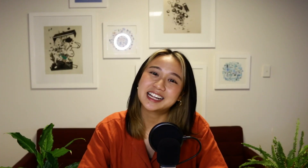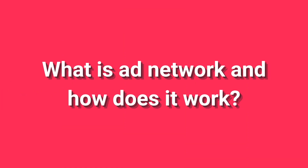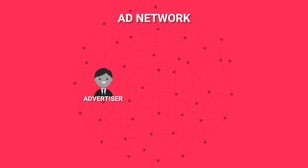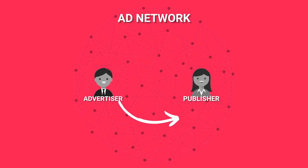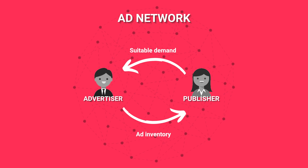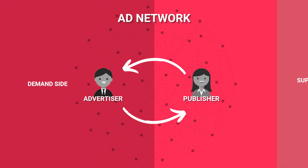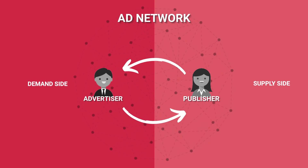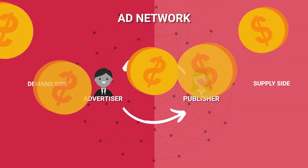I'm Naomi from PubLift and today we're talking about ad networks. So what is an ad network and how does it work? In essence, an ad network serves as the digital intermediary between advertisers and publishers, matching available ad inventory with suitable demand. By connecting advertisers on the demand side with publishers on the supply side, ad networks facilitate the running of ad campaigns as well as the maximization of advertising revenue — in other words, they do a lot of the grunt work for you.